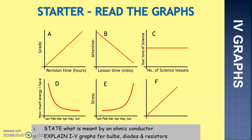Graph C shows your love of science and the number of science lessons. As the number of science lessons increases, your love of science remains the same. Graph D shows the months and how much energy I have. We can see in January there's lots of energy, then a negative correlation — as the months increase, the energy decreases.